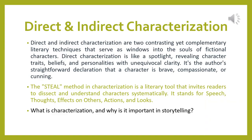Now we're going to talk about direct and indirect characterization. There are two different techniques that a writer can use to reveal a character's traits, personality, and even motivation in any story. Direct characterization is a method that involves explicitly stating the character's traits, qualities, or motivation — the author is directly telling the reader about the character. For example: 'John was a kind and genius person.'